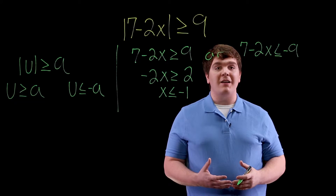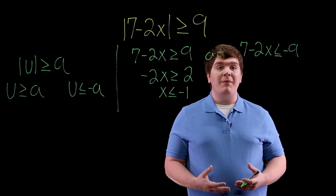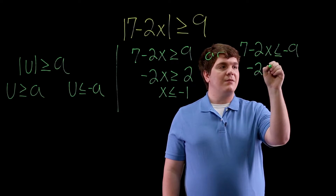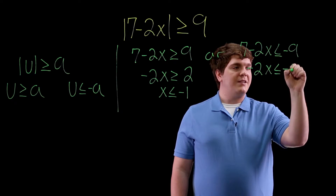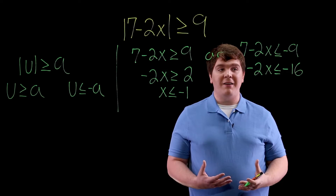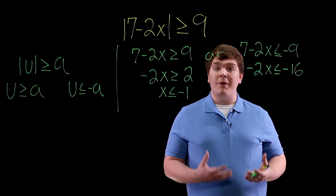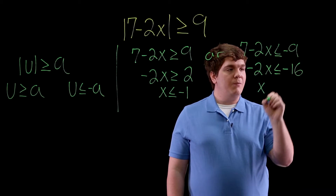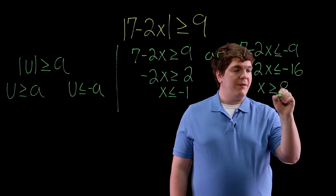Solving our second equation, 7 minus 2x is less than or equal to negative 9, we begin by subtracting 7 from each side, leaving us with negative 2x is less than or equal to negative 16. Dividing each side by negative 2, and recalling that we have to flip the sign when dividing by a negative number, we get x is greater than or equal to 8.